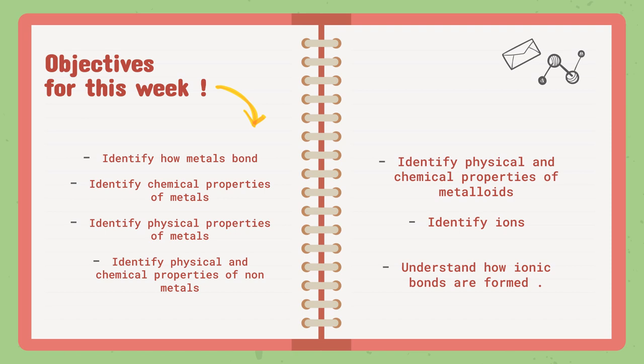Valence electrons also affect non-metals — their physical and chemical properties. We're going to cover how non-metals react with non-metals and metals, and how their physical properties are the opposite of metals: they are not good conductors of electricity, they are brittle, and they are not shiny. We will also talk about the physical and chemical properties of metalloids, which are similarly influenced by valence electrons.